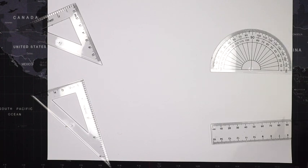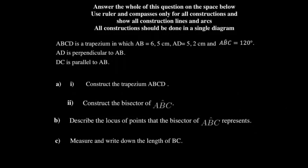The question tells us that ABCD is a trapezium in which AB equals 6.5 centimeters, AD equals 5.2 centimeters, and angle ABC is equal to 120°. You're also told that AD is perpendicular to AB, and DC is parallel to AB — those are your two parallel lines for the trapezium. You're told to construct the trapezium.